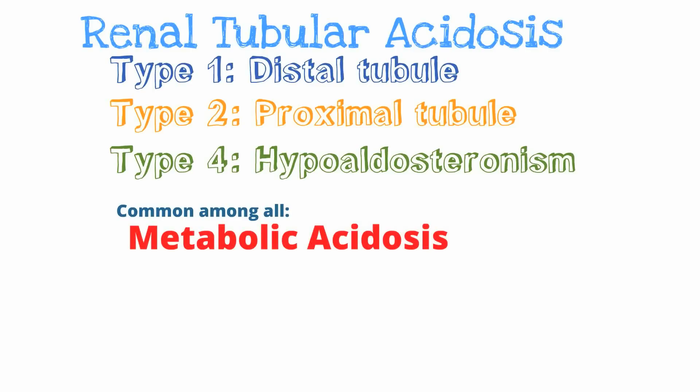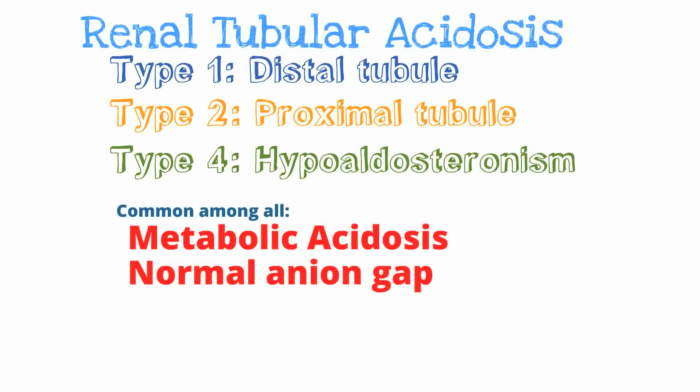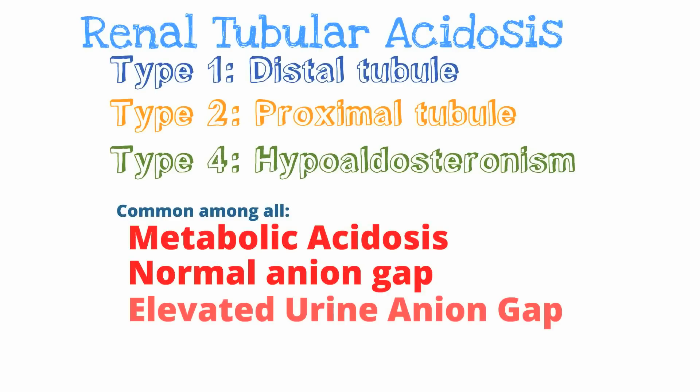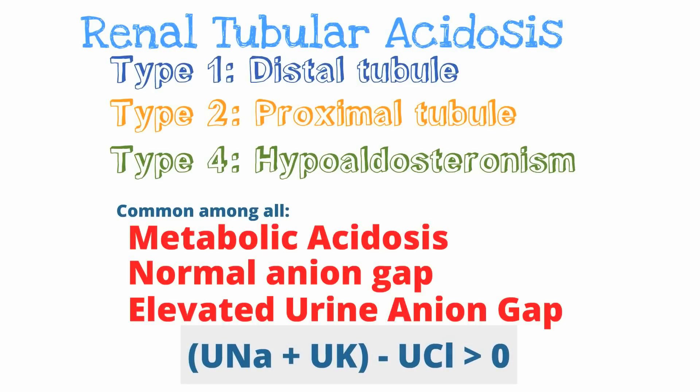In terms of presentation, the renal tubular acidoses present in a similar fashion. If you obtain an ABG and basic lab work, you may notice a metabolic acidosis with a normal anion gap. A normal anion gap with a metabolic acidosis is generally due to renal tubular acidosis, gastrointestinal losses, or medications. To differentiate, we calculate the urine anion gap.